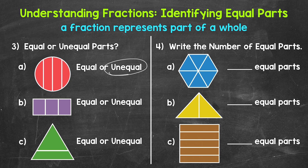Moving on to B — do we have equal or unequal parts? Well, we have three equal parts here, so these are equal. This is what we call thirds. Each part is one-third of the whole: this is one-third of the whole, this is one-third of the whole, and this is one-third of the whole. And if we take all three of those one-thirds, that gives us the whole.